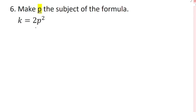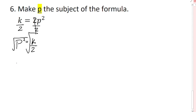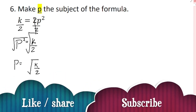Make p the subject of k = 2p². First, divide both sides by 2 to cancel the 2, giving p² = k/2. Then take the square root of both sides, so p = √(k/2). This is how we rearrange formulas to change the subject. I hope this video is helpful — have a nice day!